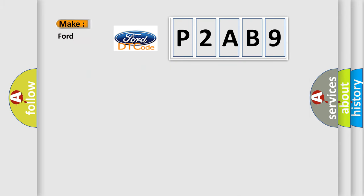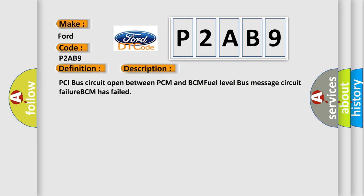So what does the diagnostic trouble code P2AB9 interpret specifically for Infinity car manufacturers? The basic definition is: No fuel level bus message. And now this is a short description of this DTC code: PCI bus circuit open between PCM and BCM, fuel level bus message circuit failure, BCM has failed.